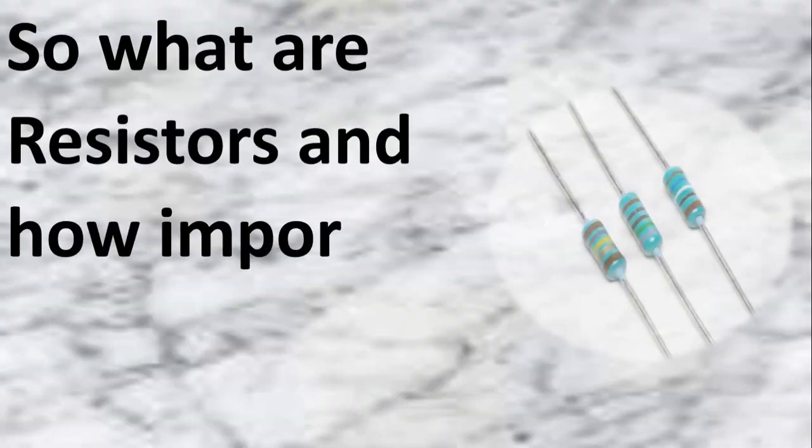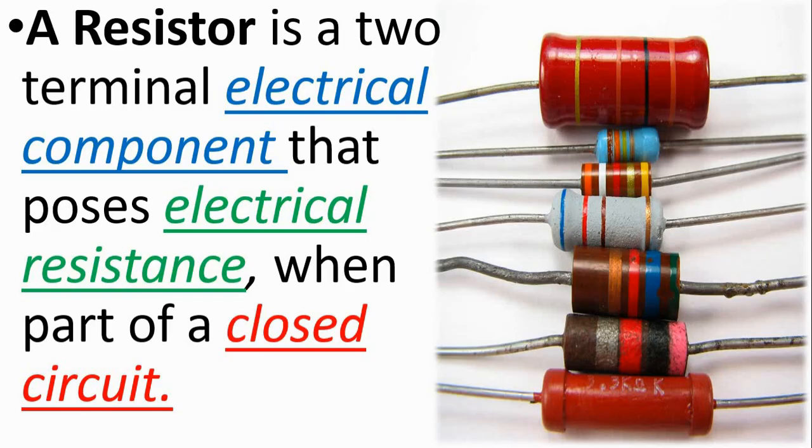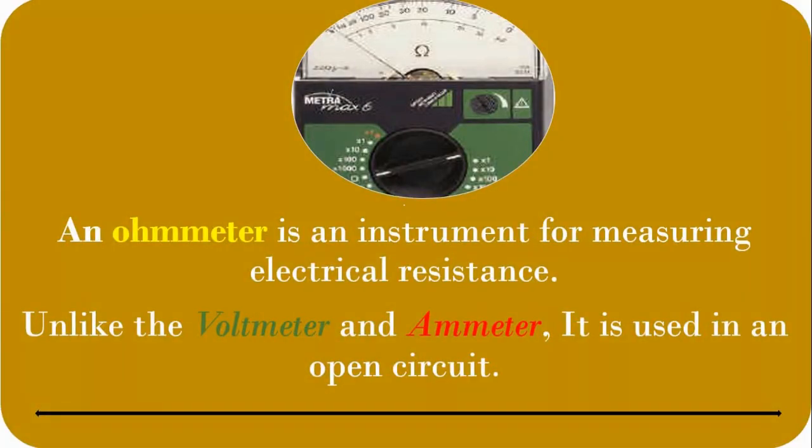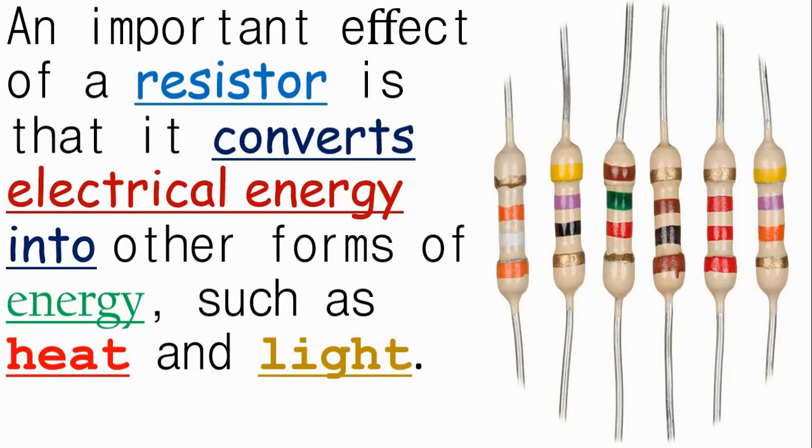So, what are resistors and how important are they? The resistor is a two-terminal electrical component that poses electrical resistance when part of a closed circuit. An ohmmeter is an instrument used for measuring electrical resistance. Like the voltmeter and ammeter, it is used in an open circuit. An important effect of a resistor is that it converts electrical energy into other forms of energy, such as heat and light.